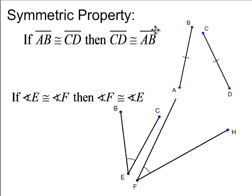Symmetric property. Another order statement. If AB is congruent to CD, then CD is congruent to AB. These two are congruent to each other. Order doesn't matter how you represent that. Same thing with angles. If angle E and angle F are congruent, then F is congruent to angle E. There you go. There's your angles.